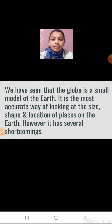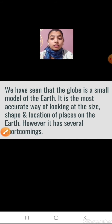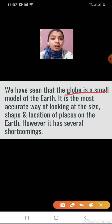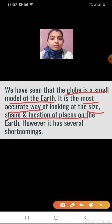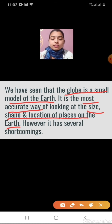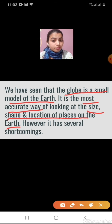The globe is a small model of earth. It is the most accurate way of looking at the size, shape, and location of the places on the earth. In our first chapter we studied that globe is a small model of earth and it is the most accurate way of looking at the size, shape, and location of the places on the globe.